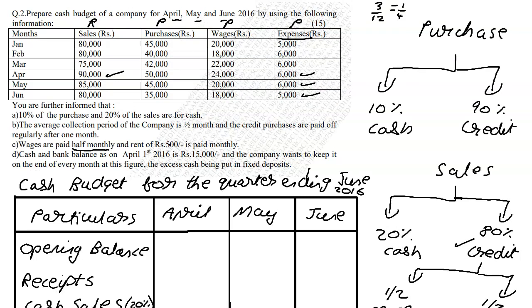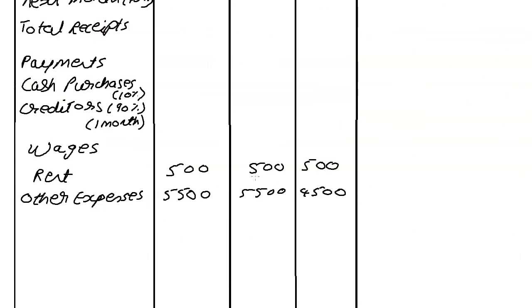Cash and bank balance given is 15,000, so that is our opening balance. There's also an adjustment: anything in excess of the minimum balance goes into a fixed deposit. We calculate the closing balance first, then decide whether an FD payment is needed. We add a fixed deposit row under payments.